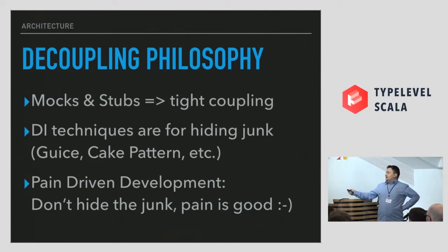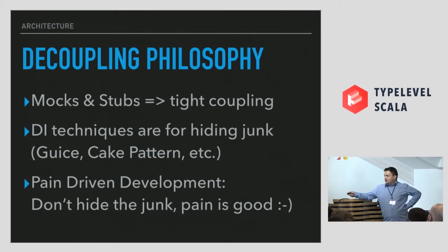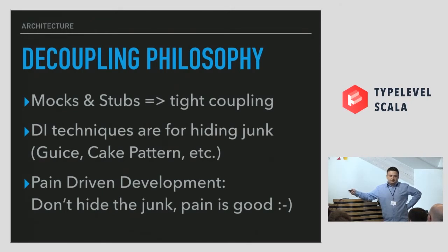I think that whenever you see mocks and stubs in a codebase, that's a sign of tight coupling. We do not use mocks and stubs — we do not need to. Dependency injection techniques are used for hiding problems you have in your code. If a component has too many dependencies, that's a problem — it's not a problem of injection, it's a problem that you have too many dependencies. I believe in pain-driven development.